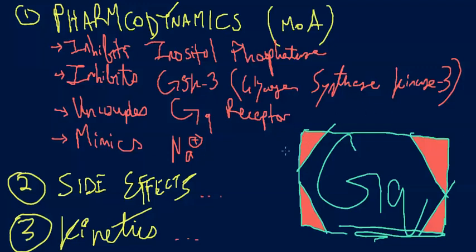We have to know that lithium primarily acts on the Gq-coupled receptor — not directly as an antagonist, but through an indirect action. In terms of pharmacodynamics, it inhibits inositol phosphatase, inhibits GSK-3 (glycogen synthase kinase 3), uncouples the Gq receptor, and mimics sodium because it looks a lot like sodium.